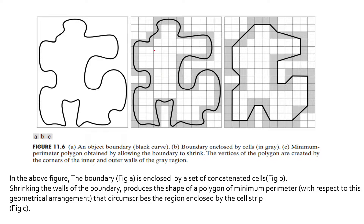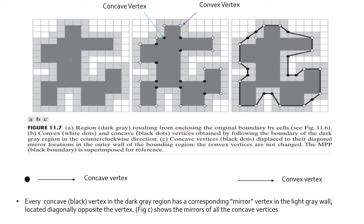Here, as we are surrounding the boundary with a group of cells, we are essentially reducing the area enclosed inside the boundary. Let us represent the area enclosed inside the boundary with a dark grey color. As we traverse through the boundary of the dark grey region, we see that the vertices are connected with 4-connected straight lines, and we travel along the counter-clockwise direction. We can see that there are convex and concave vertices — that is, angles which are less than 180 degrees and angles which are greater than 180 degrees.